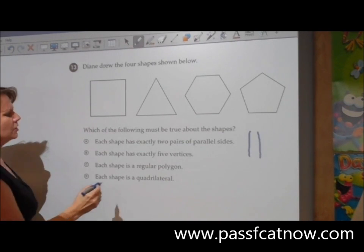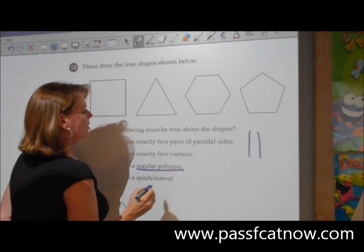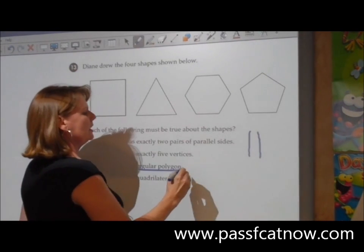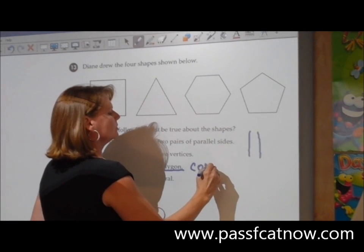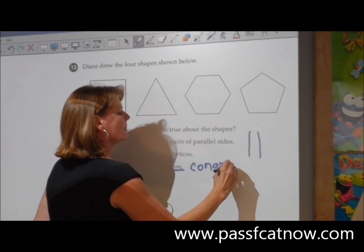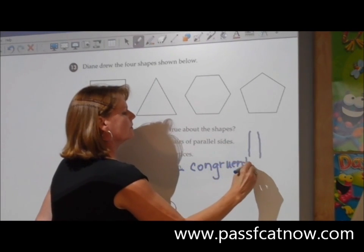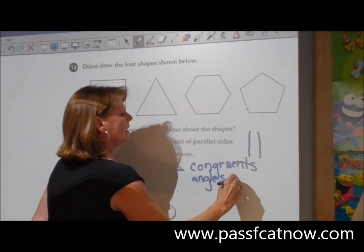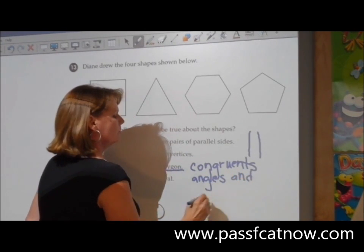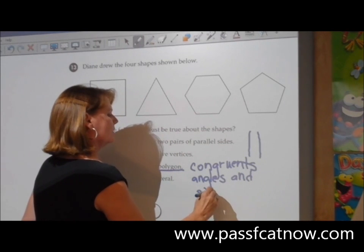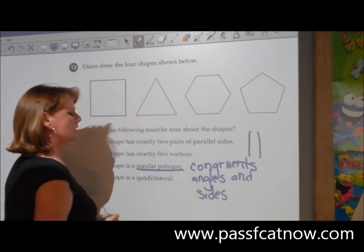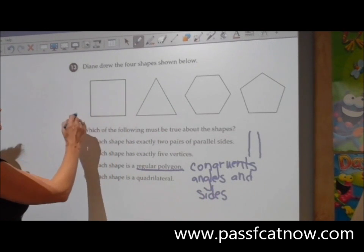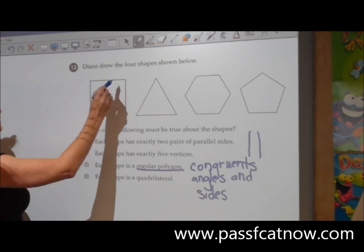Each shape is a regular polygon. Regular polygon, remember what that means. It means it has congruent angles. Congruent means the same. Angles and sides. Meaning all the sides and all the angles are the same for each. We know on a square the sides are all the same length. They're all 90 degree angles.